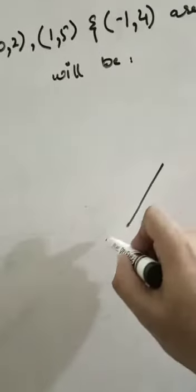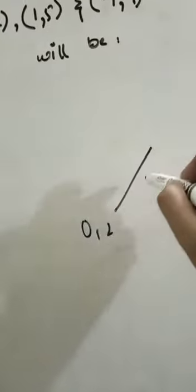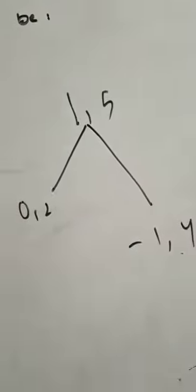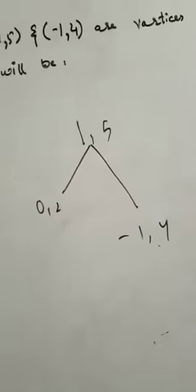The points are (0,2), (1,5), and (-1,4). We are finding its perimeter.